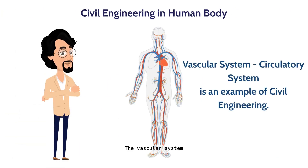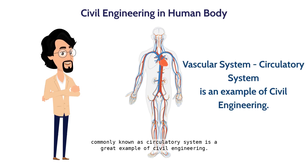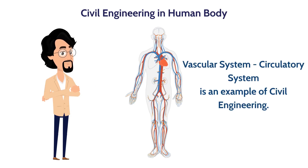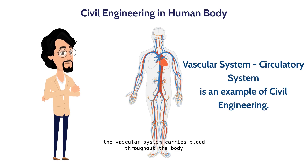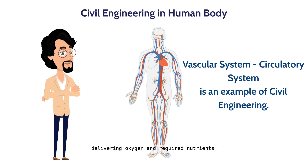The vascular system, commonly known as the circulatory system, is a great example of civil engineering. The circulatory system resembles a road system — similar to how roads lead us to the right destination, the vascular system carries blood throughout the body, delivering oxygen and required nutrients. The civil engineering in humans enables blood to circulate throughout our body.